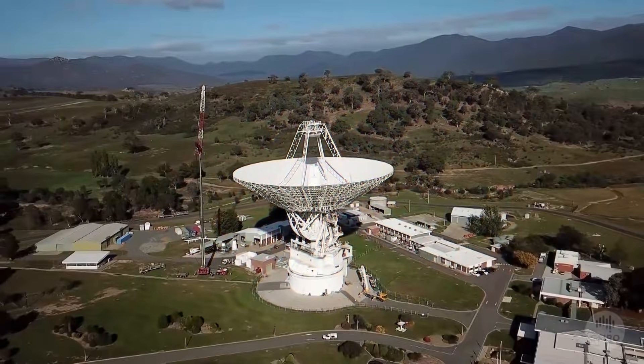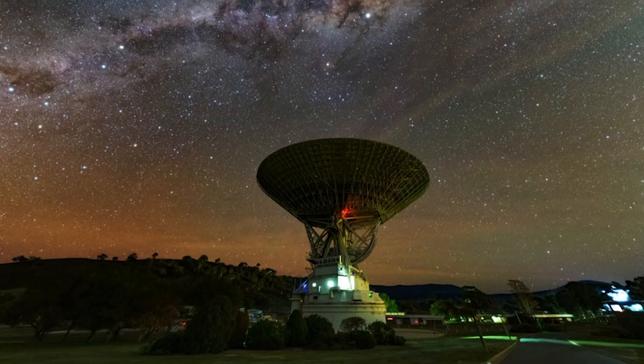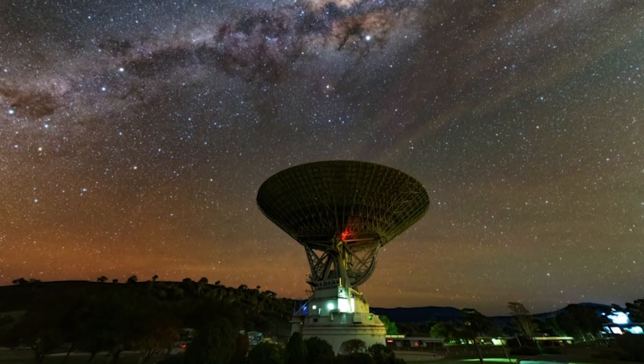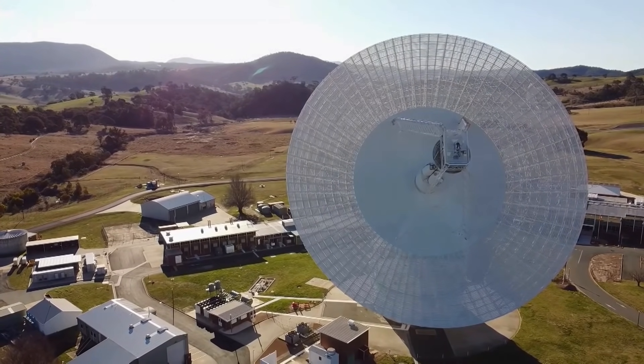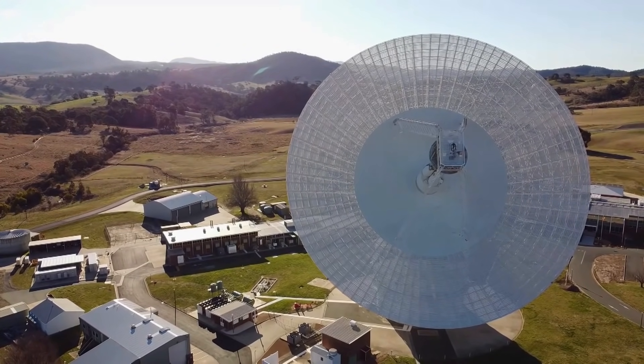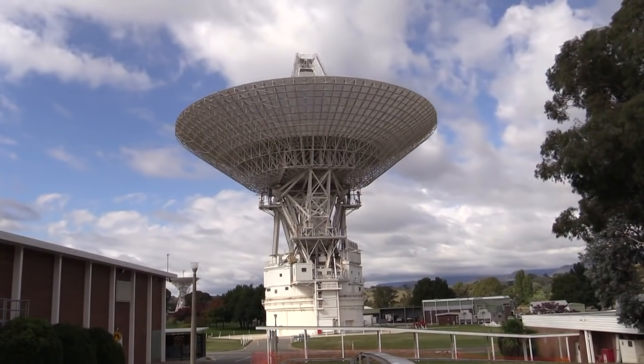Its antenna system has a fully rotating, parabolic, 70-meter or 230-foot DSS-43 antenna, weighing over 3,000 tons, made up of 1,272 aluminum panels, 4,180 meters squared in area, 45,000 square feet.